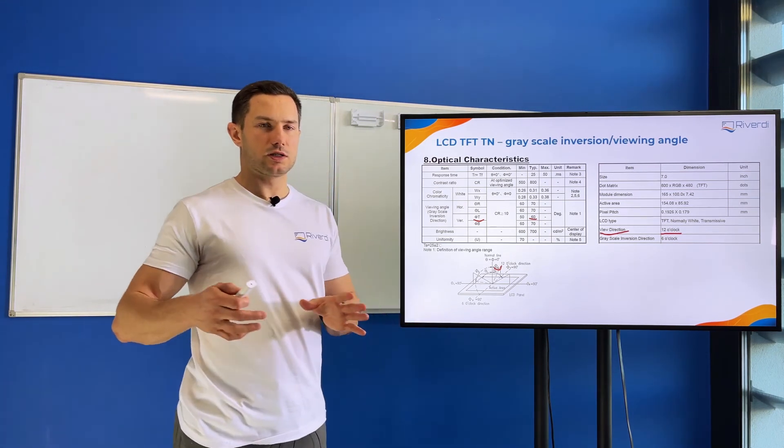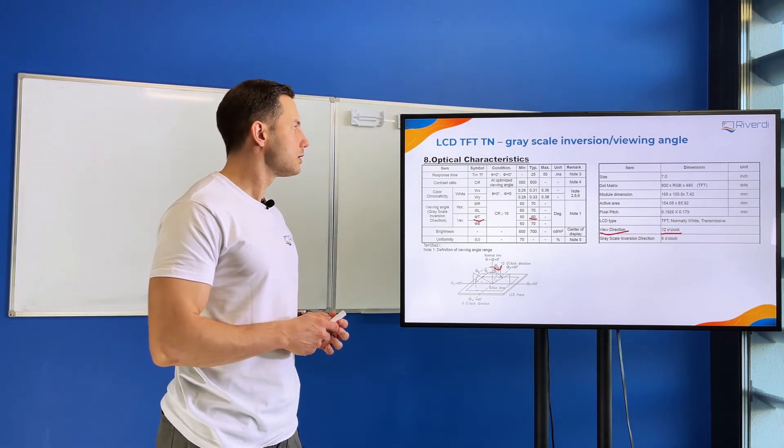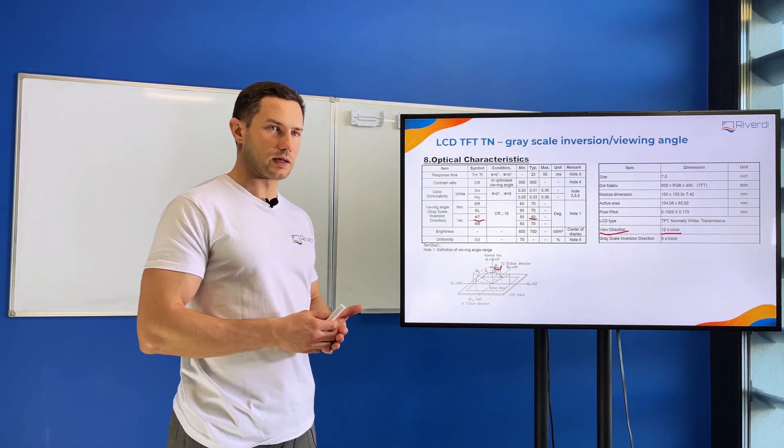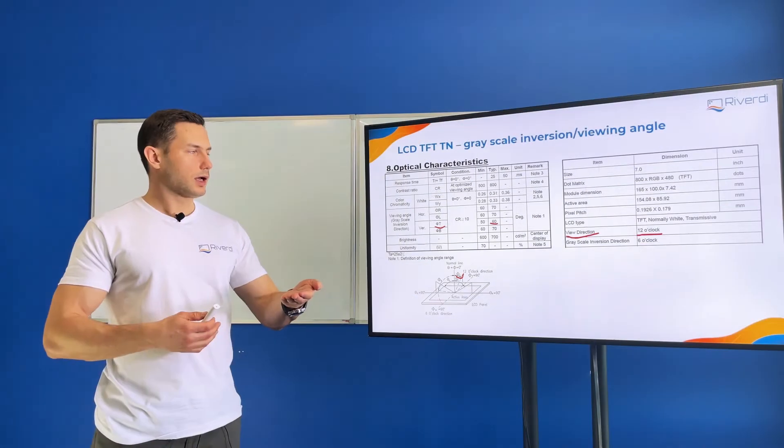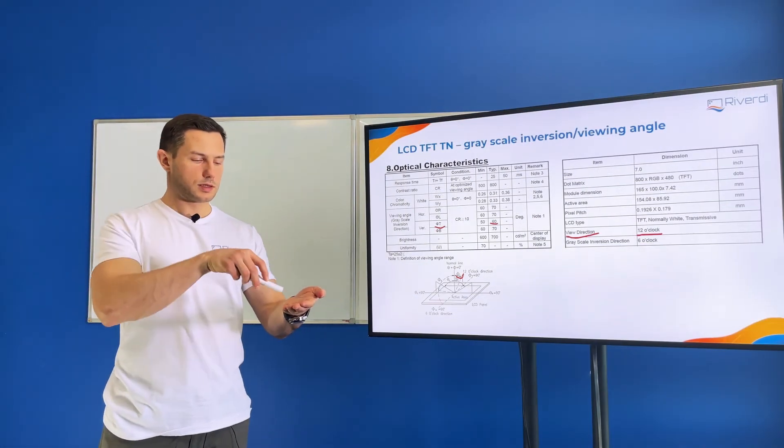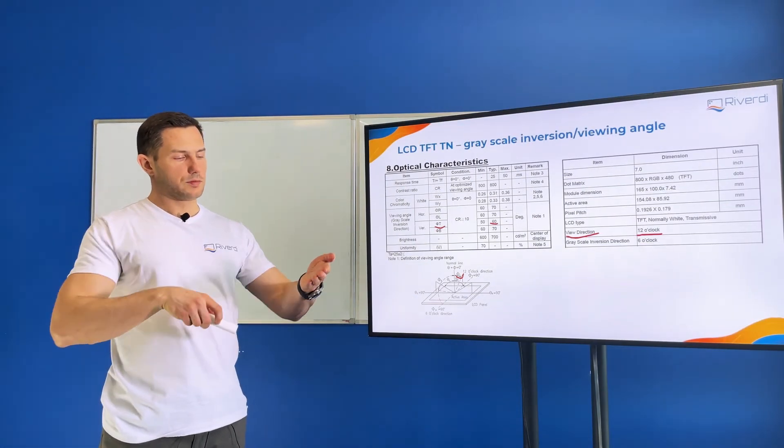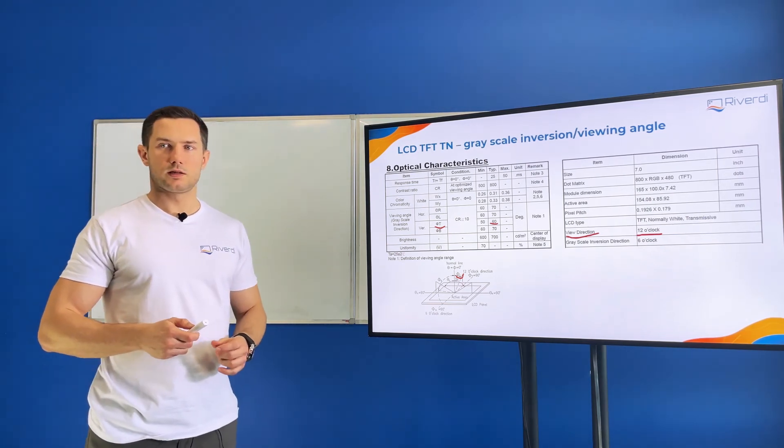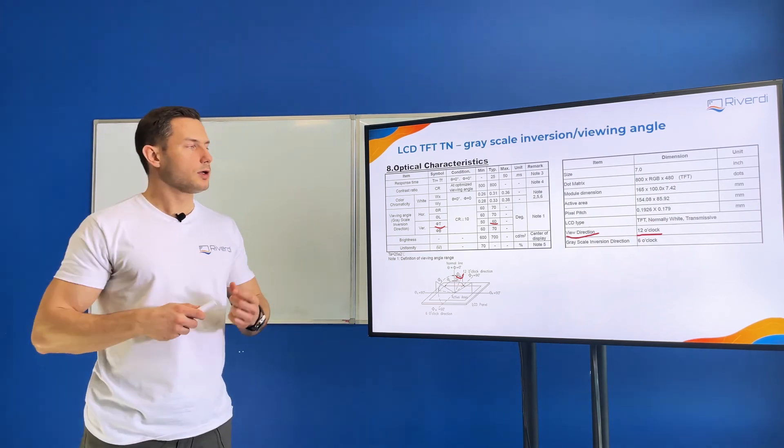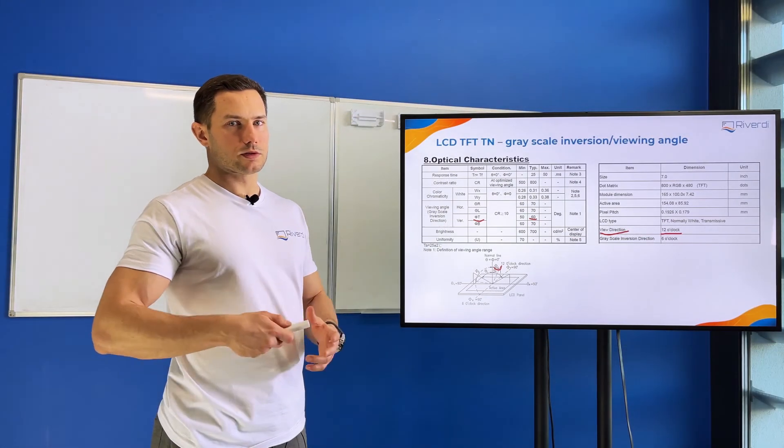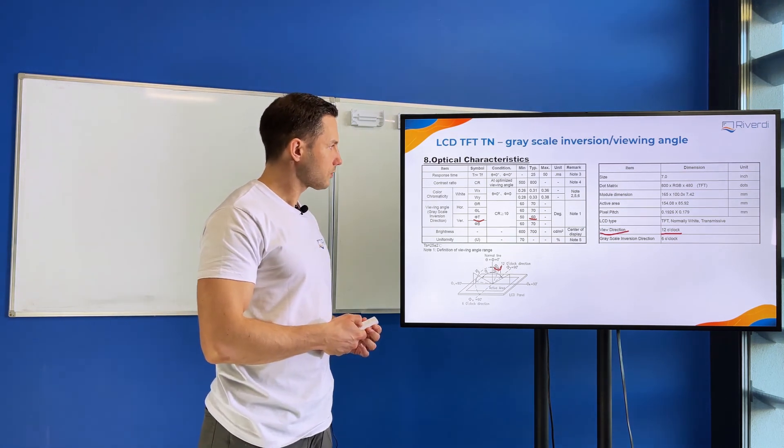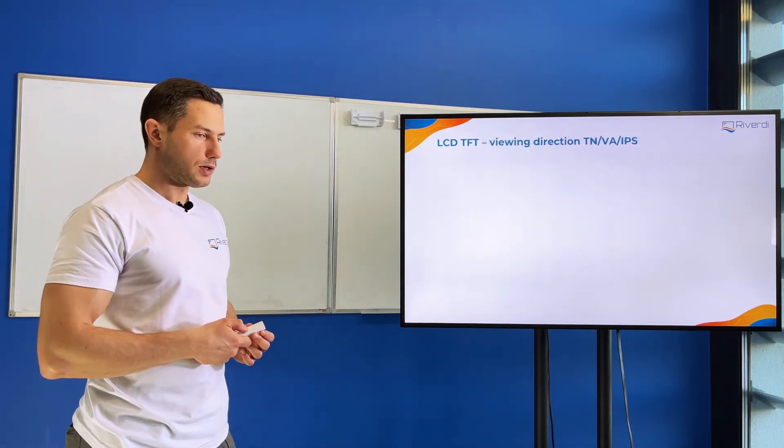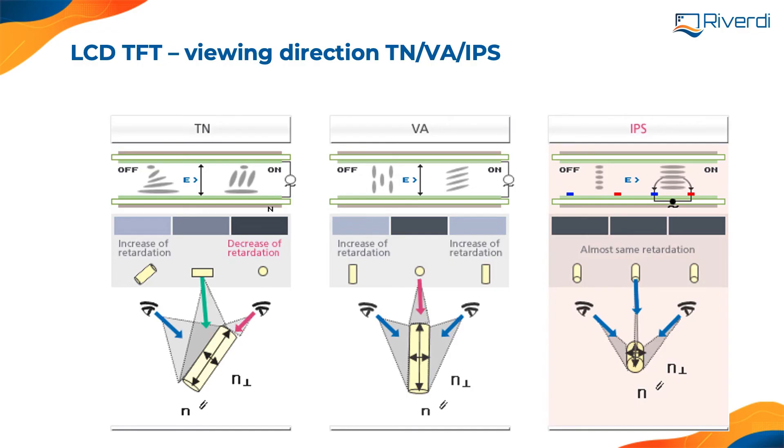When you buy the older TN display technology, which is still very popular and Riverdy still sells, you need to be careful where you put your display. For a handheld device, you'll see the display from the bottom, but if you put it on the wall, you'll see it from the top. You need to define this during design because later changing this direction is usually impossible or expensive. Please be careful with the viewing angle of TN displays.